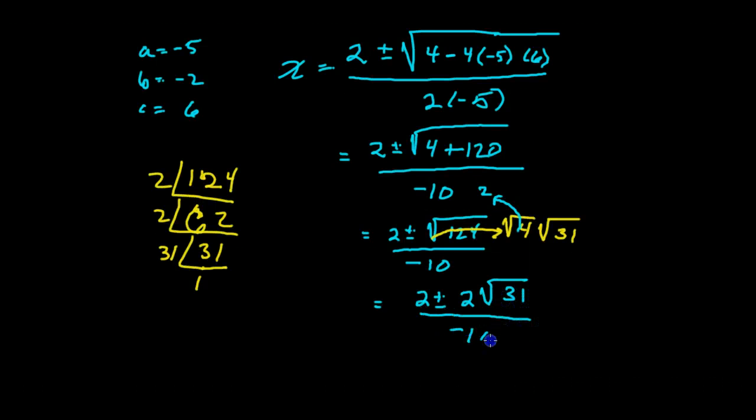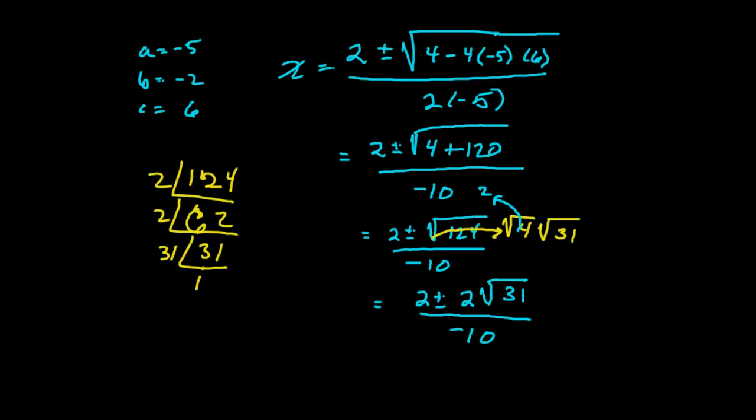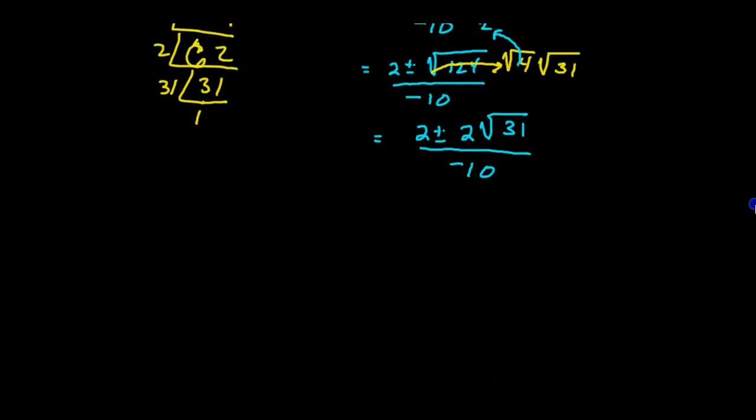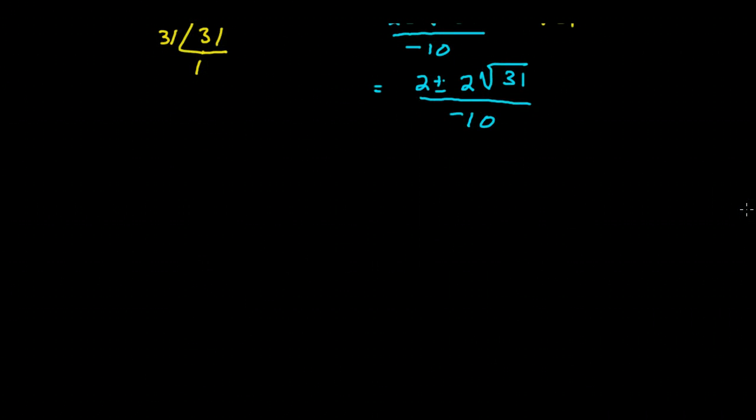So what we're really saying here is 2 plus or minus 2 square roots of 31 over negative 10. And here's where we have to be careful.